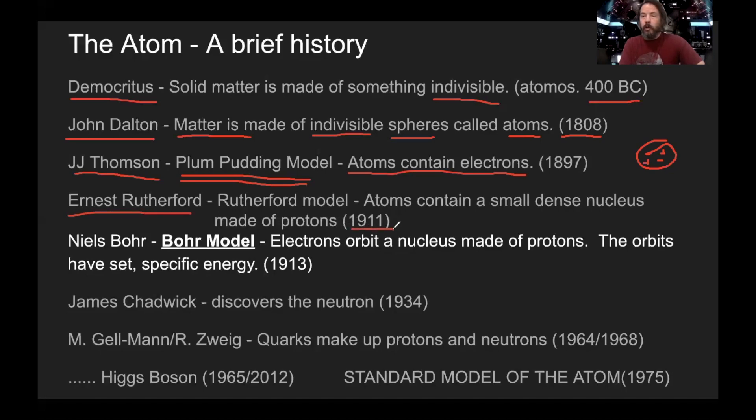So about 20 years later, Ernest Rutherford is doing work with radioactive material. Basically what he does is he shoots particles at a sheet of gold foil. And what he determines is the atom contains a small, dense nucleus made of protons. Instead of this solid sphere, what he says is there's got to be a nucleus and the nucleus has to be positive and the negatives are out there somewhere. And the in-between space is empty space.